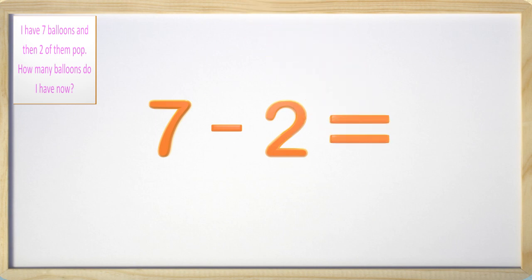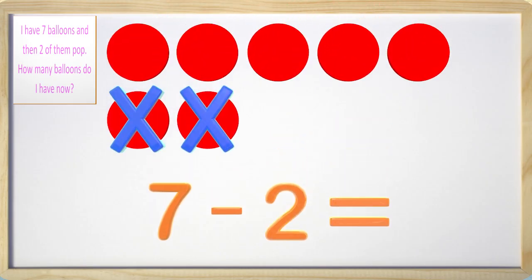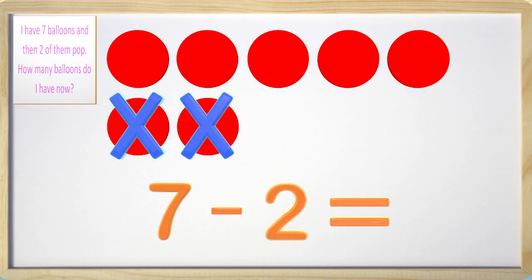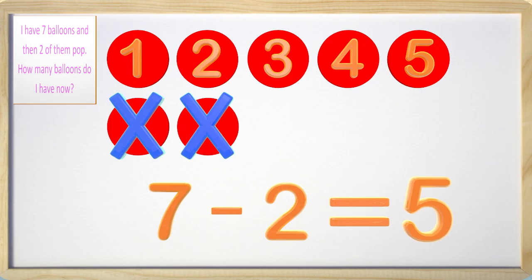When we take the two balloons away, how many do we have left? Looking at the circles, we started with seven, and two popped, and that leaves us with one, two, three, four, five. We have five balloons left.